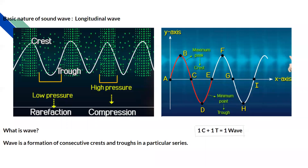Looking at the graph, we have created a wave and labeled different points A, B, C, D, E, F, G through I. The maximum peak is the crest, and the minimum point — the valley — is known as the trough.